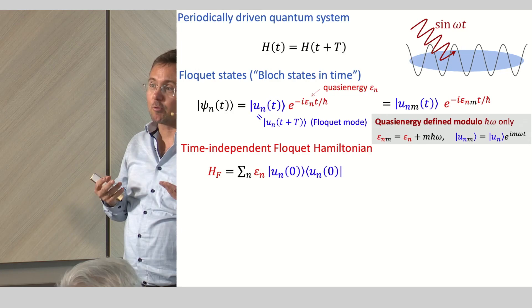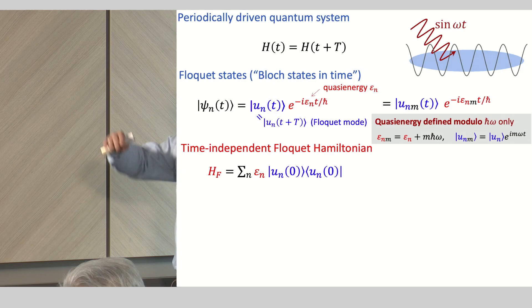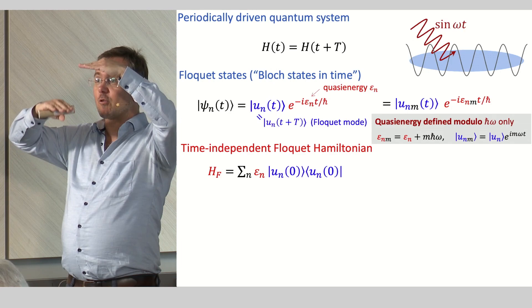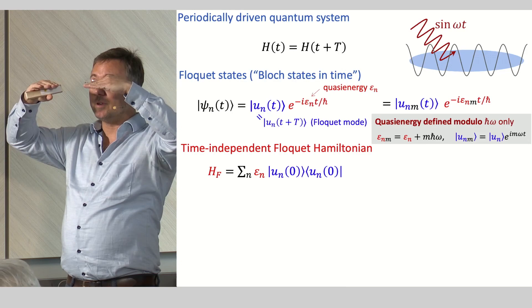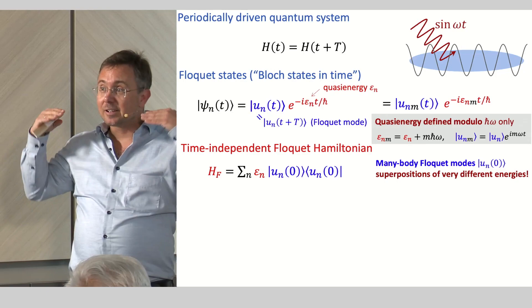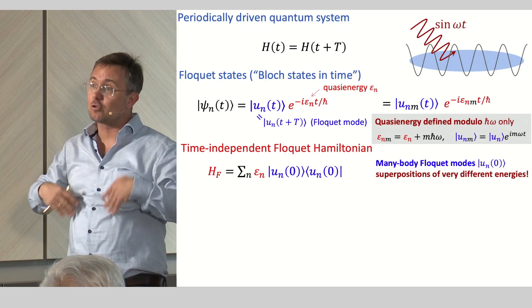This means quasi-energies are just determined up to integer multiples of h-bar omega, which describes something we all know very well, namely resonant coupling. If we have two unperturbed states of an undriven system and we switch on some time-periodic perturbation resonant with the frequency resonant to this energy difference, these two states appear to be degenerate. A tiny perturbation can already hybridize these states.